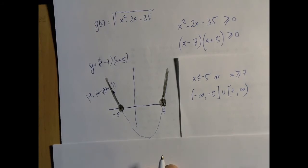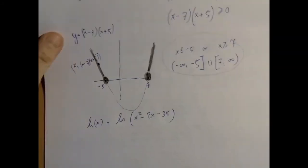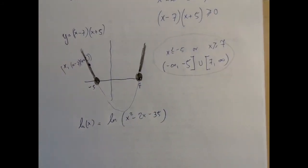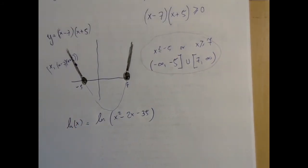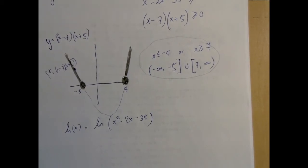So the third one is very, very similar to the previous one. The only difference is that logarithms are a little bit touchier than square roots. They don't even handle zero.